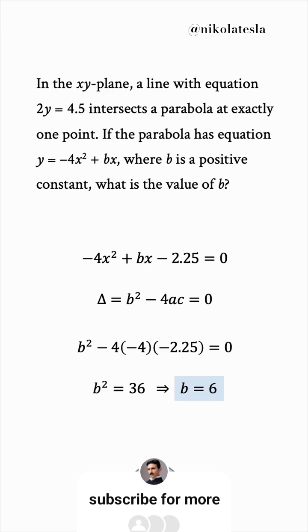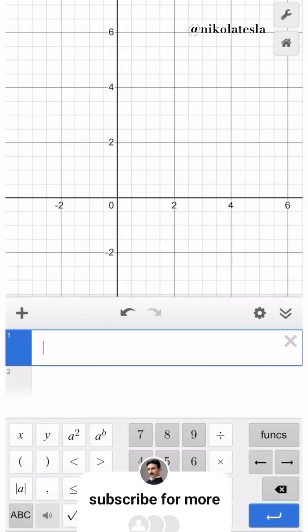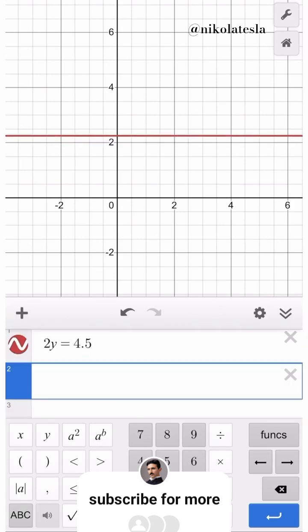For the digital SAT, you have access to a built-in Desmos calculator. So why not use that luxury? We'll input the equation of the line, and then the equation of the parabola, y equals negative 4x squared plus bx.